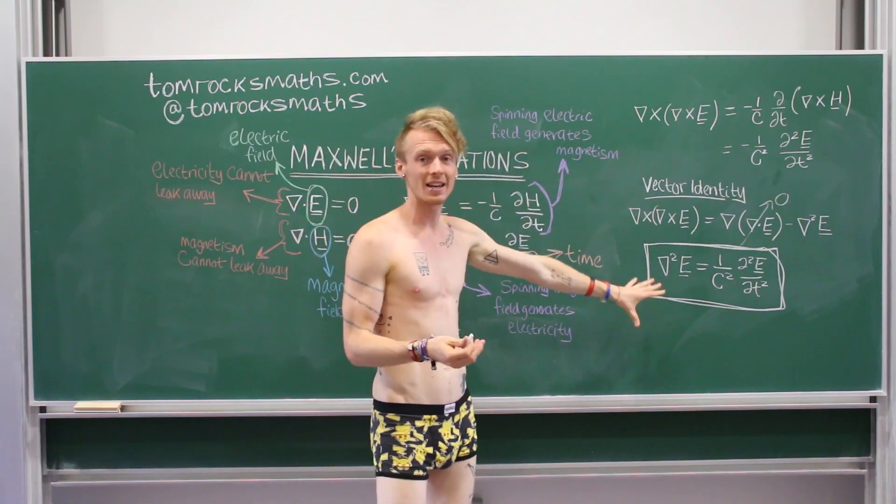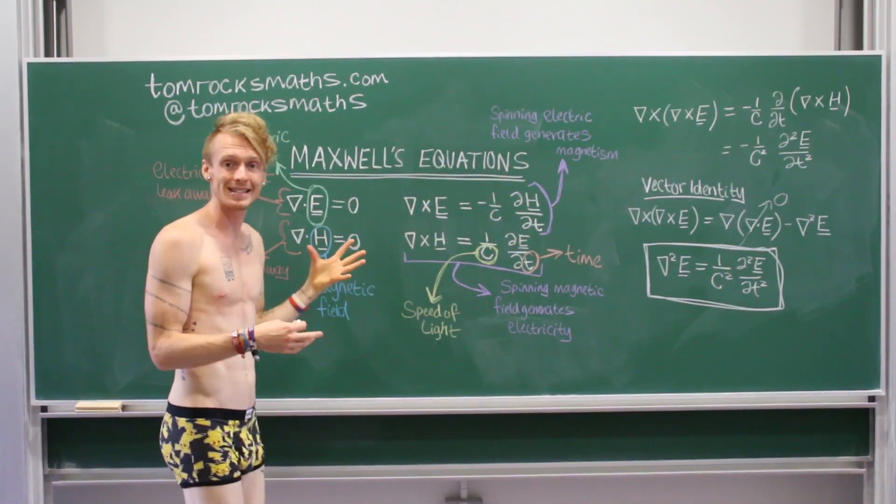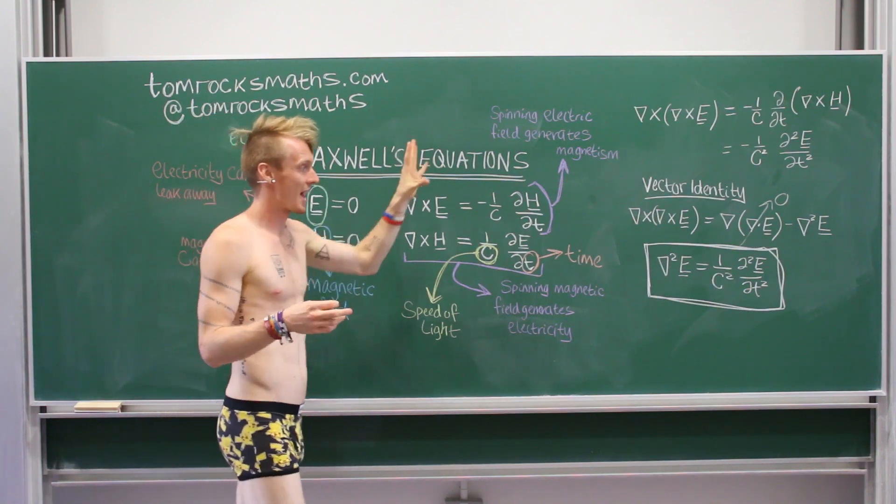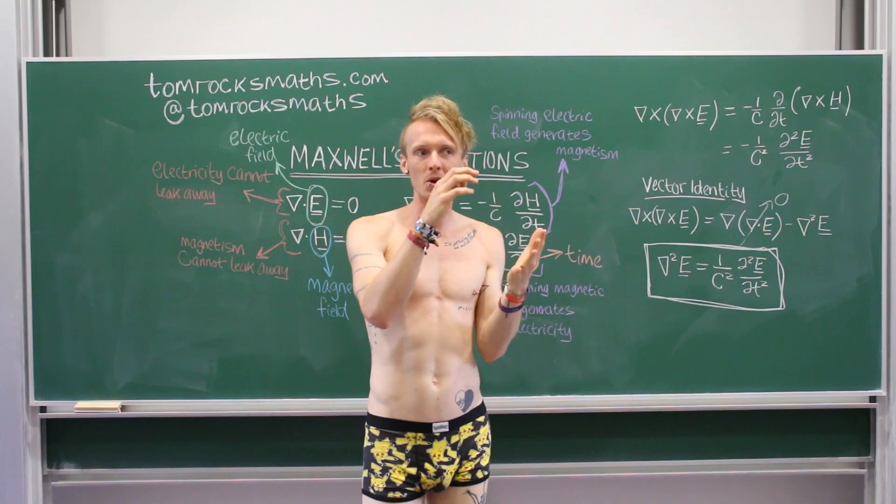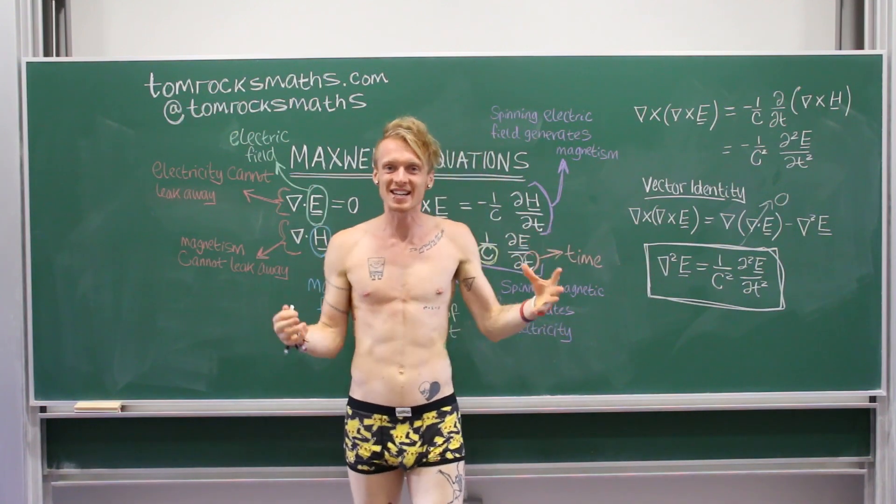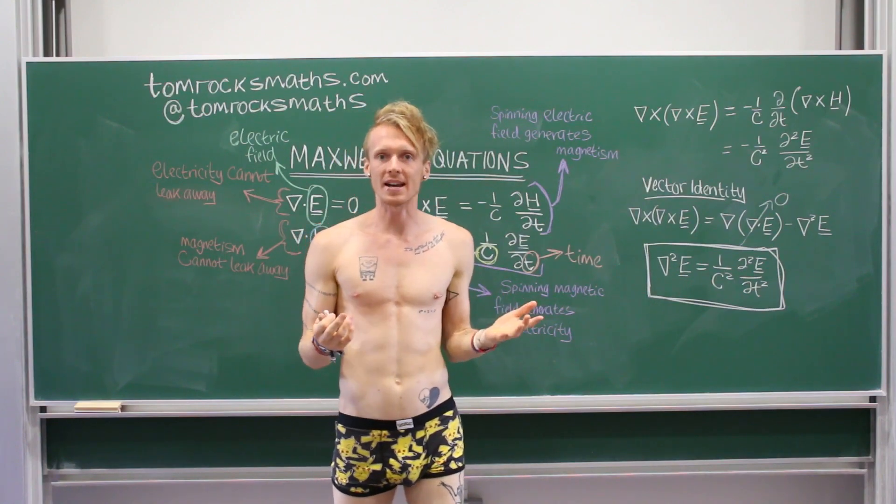And you can do the same calculation, because these equations are so similar for electricity and magnetism. You can do the same thing and get the same equation with your magnetic field. And so, both electricity and magnetism satisfy the wave equation. So, they're both waves, and they both move at the speed of light.